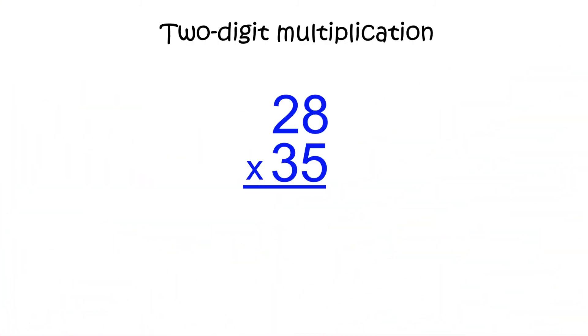One way to multiply two-digit numbers is to align them vertically. Let's multiply the numbers 28 and 35.